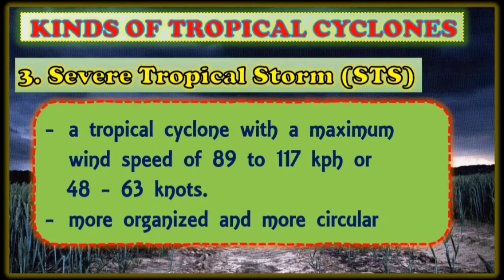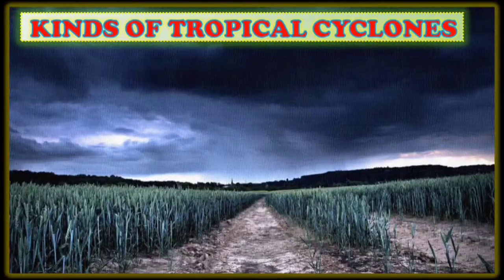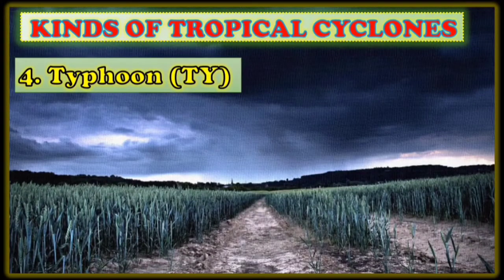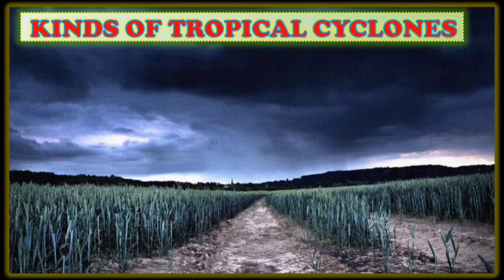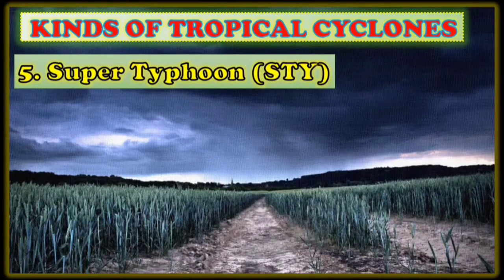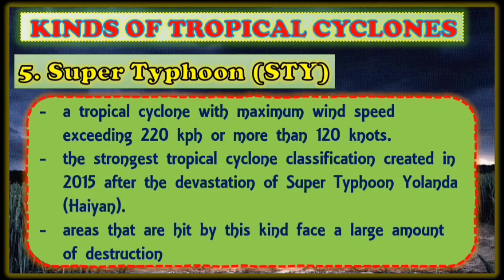Number three kinds of tropical cyclones is severe tropical storm or STS: a tropical cyclone with a maximum wind speed of 89 to 117 km per hour or 48 to 63 knots; more organized and more circular. Number four is typhoon or TY: a tropical cyclone with a maximum wind speed of 118 to 220 km per hour or 64 to 120 knots, most of the time accompanied by heavy rains and strong winds. Number five is super typhoon or STY: a tropical cyclone with a maximum wind speed exceeding 220 km per hour or more than 120 knots, the strongest tropical cyclone classification, created in 2015 after the devastation of super typhoon Yolanda or Haiyan. Areas hit by this kind face a large amount of destruction.